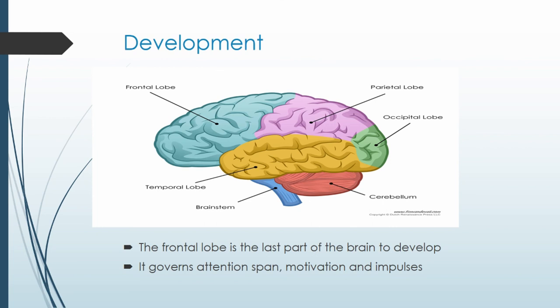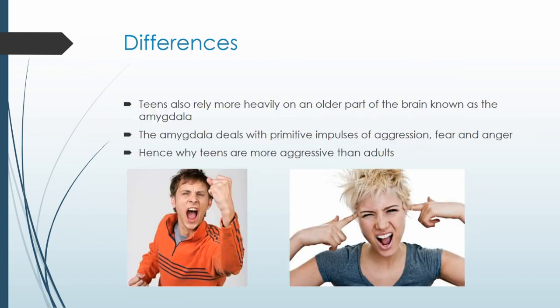We also know the frontal lobe is the last part of the brain to develop. It covers attention span, motivation and impulses. The adolescent brain also relies more heavily on the older part of the brain, known as the amygdala. The amygdala deals with primitive impulses of aggression, fear and anger. Hence why teens are more aggressive than adults.